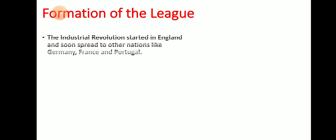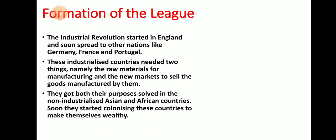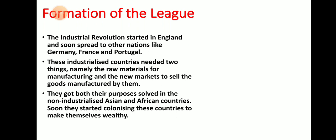First, we will learn about the formation of the League. The Industrial Revolution started in England and soon spread to other nations like Germany and France. These industrialized countries needed two things: raw materials for manufacturing, and new markets to sell the goods manufactured by them.